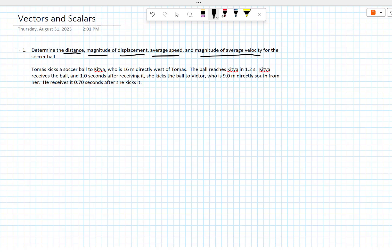So let's start by drawing a vector diagram. First the ball is with Tomás, going to be right here, and he kicks the ball to Kitya, who is 16 meters to the west, so I'm going to indicate that with an arrow. I'm going to label it 16 meters.